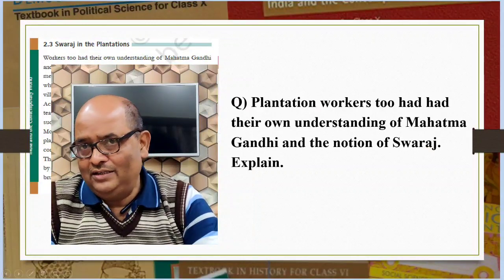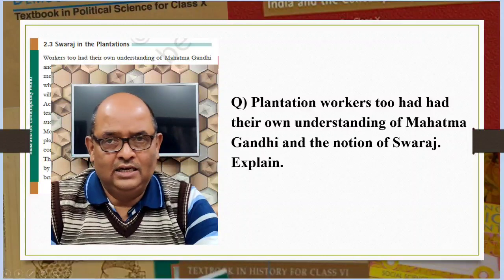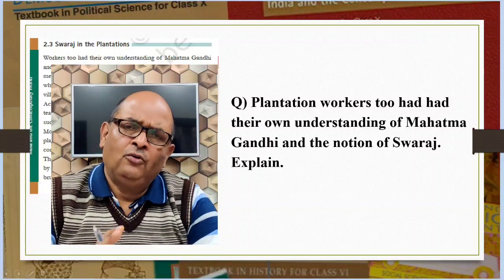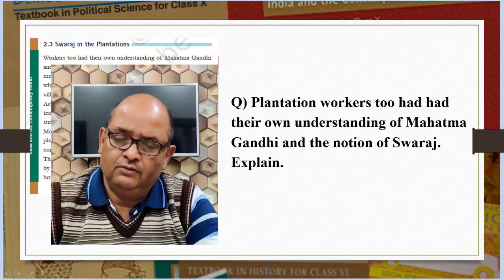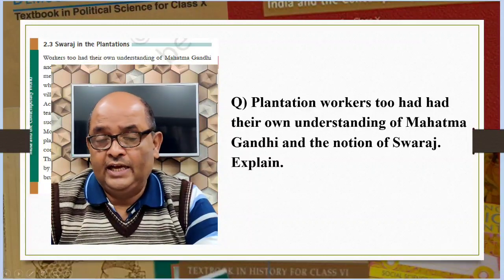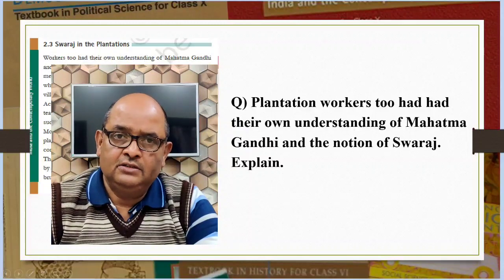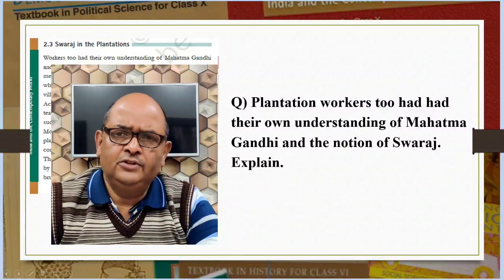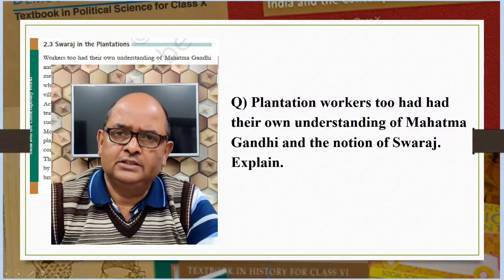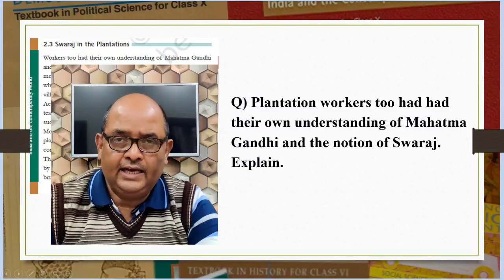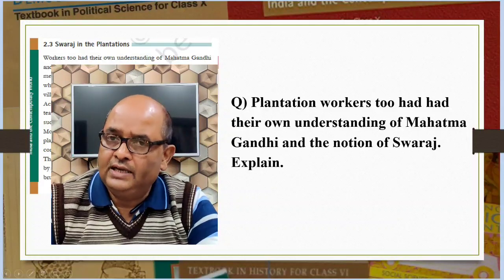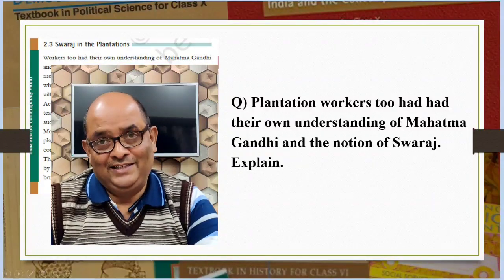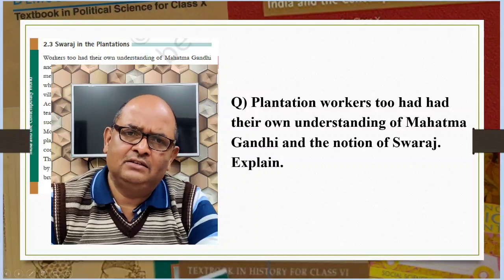Plantation workers too had their own understanding of Mahatma Gandhi and the notion of Swaraj. For plantation workers in Assam, freedom meant the right to move freely in and out of the confined space in which they were enclosed, and it meant retaining a link with the village from where they had come. When they heard of the non-cooperation movement, thousands of workers defied the authorities, left the plantations and headed home. They believed that Gandhi Raj was coming and everyone would be given land in their own villages. They interpreted Swaraj as a time when all sufferings and troubles would be over.